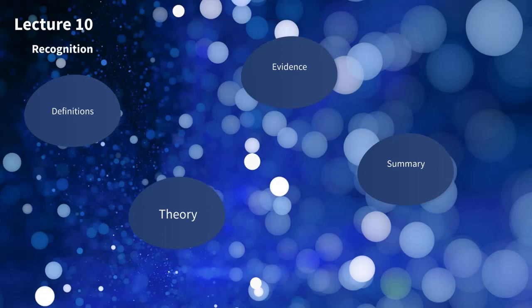In this lecture we're going to talk about recognition. This is a form of episodic memory. We're showing you some previously encountered objects intermixed with a bunch of new items, and your job is to tell us which ones are old and which ones are new. So recognition is: do you recognize it or not, is it old or new?